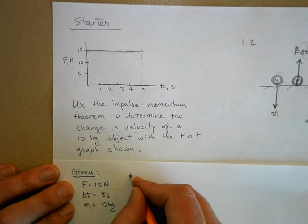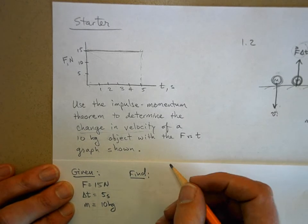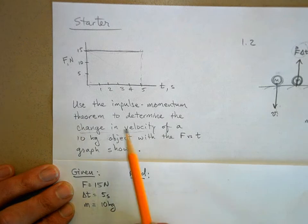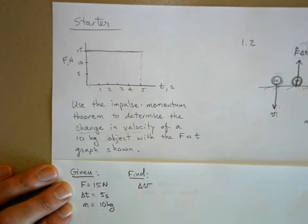And what are we trying to find? Now you've got to be really careful and read the problem carefully. Because it says a change in velocity. Well, that would be delta v, wouldn't it?